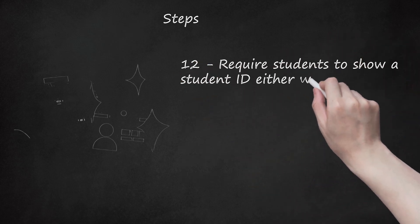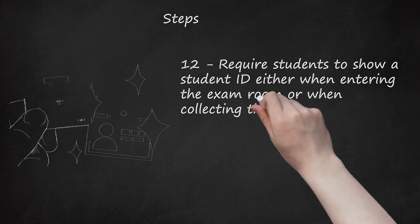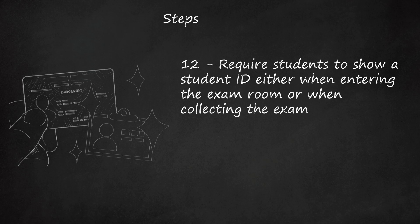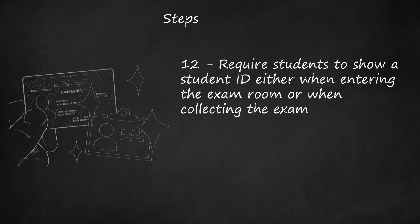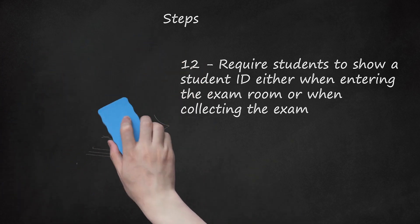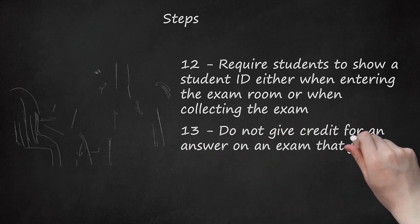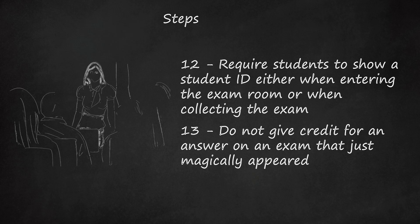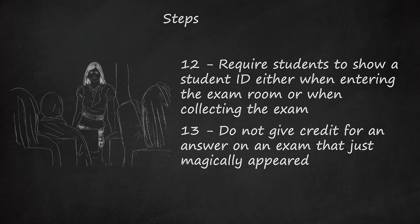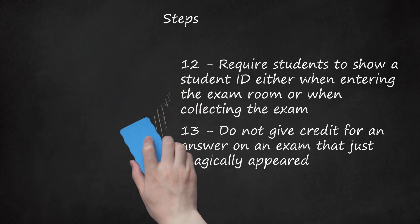Step 12: Require students to show a student ID either when entering the exam room or when collecting the exam. Require them to physically hand you the ID so you can tell if it is authentic. Check this against your class roster, and plan not to permit entry or grade an exam if the student does not appear on your roster, does not have an ID, or has a false ID. Step 13: Do not give credit for an answer on an exam that just magically appeared. Require that students show all of their work and provide reasoning for the answer they arrived at. It is very easy to simply copy a final answer off of another student, and if a student is not showing crucial steps in their work, that can also be a sign that their answer was copied.